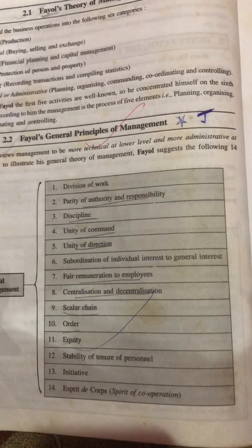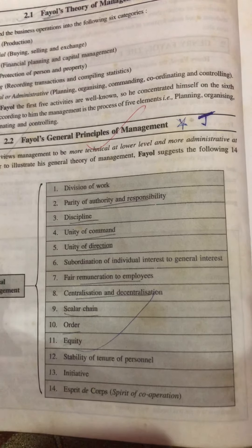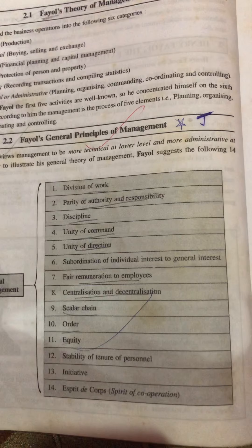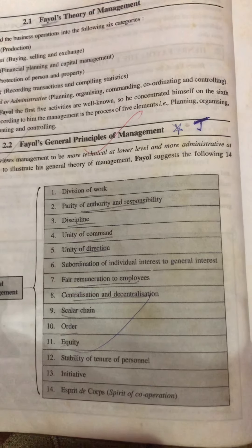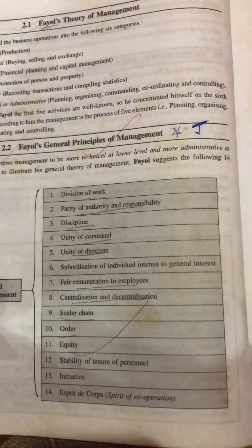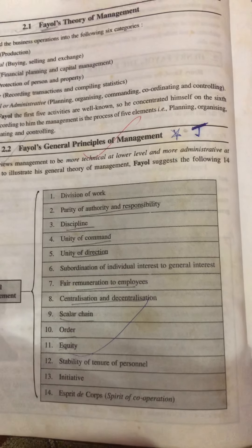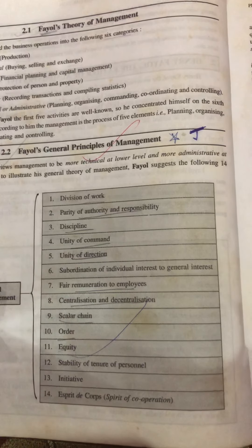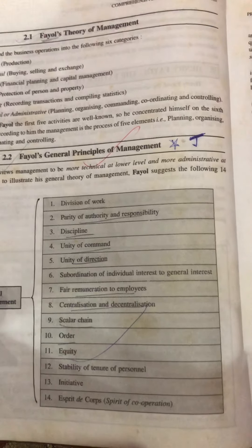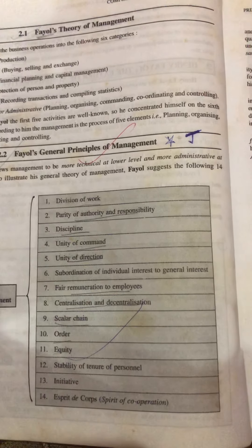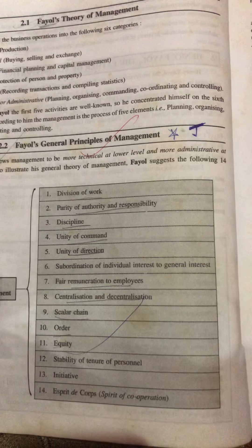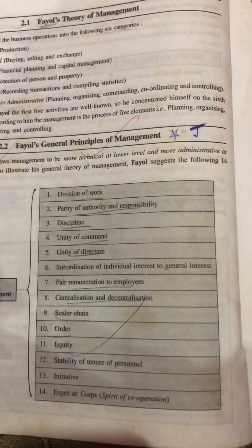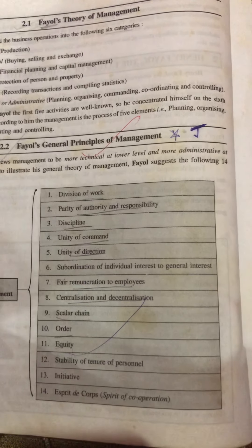The first one is division of work. Fayol said the total work of an organization should be divided into smaller parts, and these parts should be assigned to employees based on their skill set. For example, a person who is good at sales should be given a sales job.